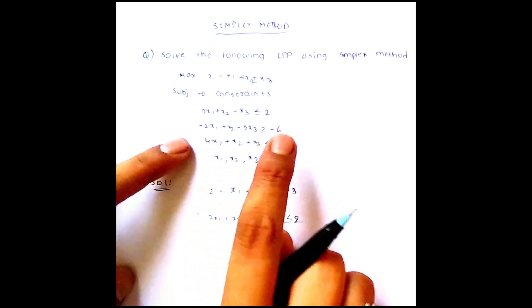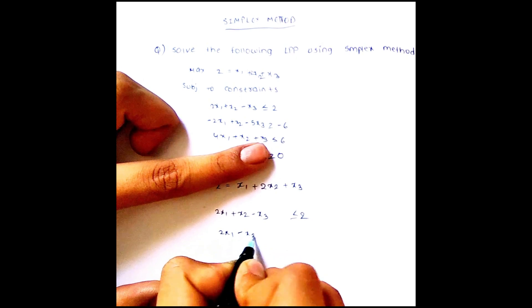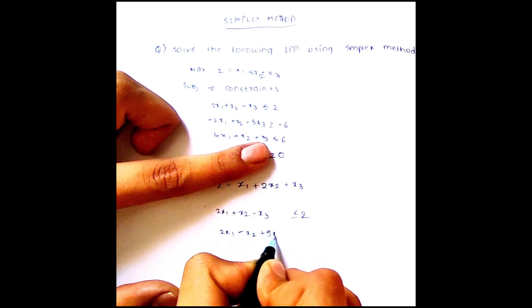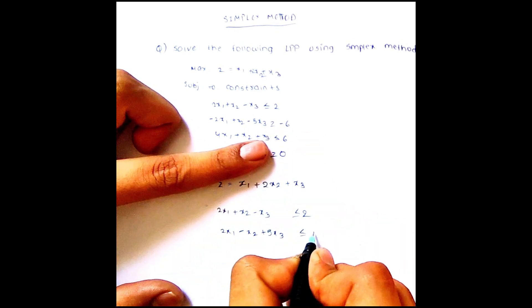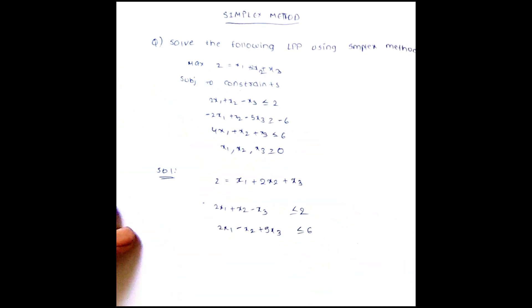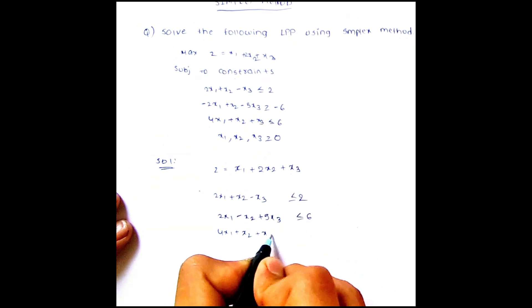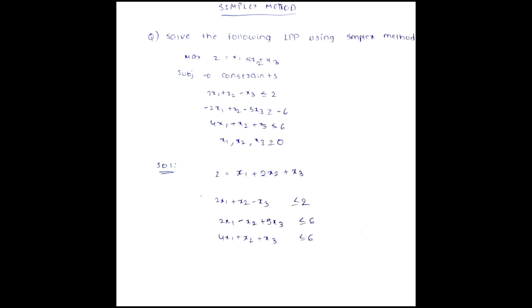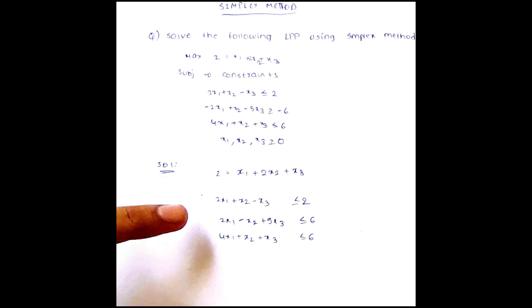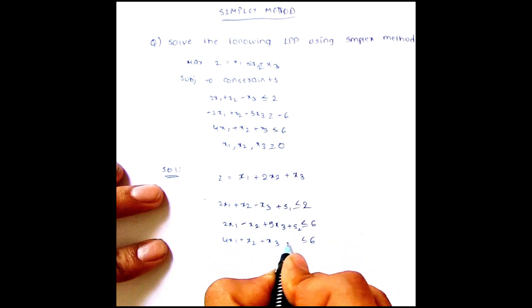So we have to multiply it with minus 1. If I multiply it with minus 1, what equation do you get? 2x1 minus x2 plus 5x3. The symbol will also change: greater than or equal to becomes less than or equal to 6. And the third equation: 4x1 plus x2 plus x3 less than or equal to 6. In the simplex method, we have to add one slack variable — s1, s2, and s3 — in each of these constraints.